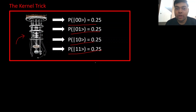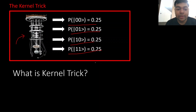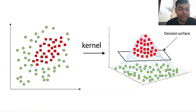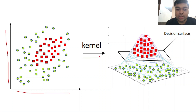Before we move on, let's revise what the kernel trick is. If your given data is not linearly separable, what you do is project it into a higher dimensional space, and just hope that in that higher dimensional space the data becomes linearly separable. As you can see in this picture, we have two dimensions and the data is not linearly separable. Using the kernel trick adds a third dimension, and you can see the data is now linearly separable. So this is what a kernel trick is essentially.